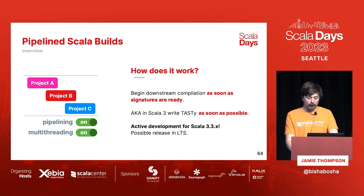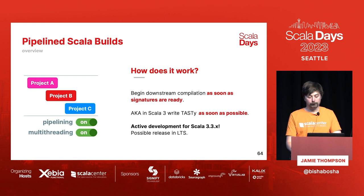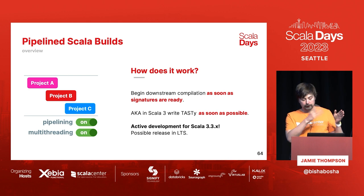How does this actually work? We can start the downstream project as soon as we've produced signatures — which, if you recall, happens when we run the pickler phase to produce tasty. That's only in the first third of the compiler, so after that point anything remaining can be done in the background while we start downstream compilations. This is in active development for Scala 3.3.